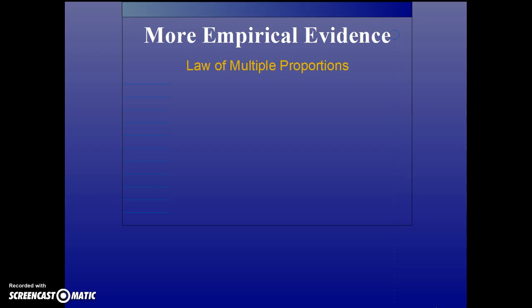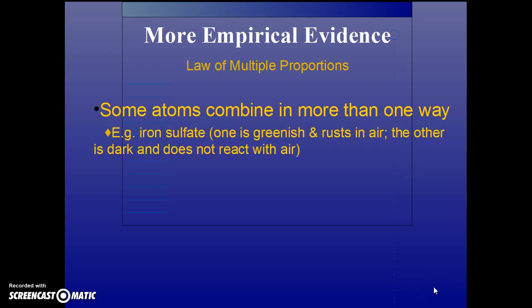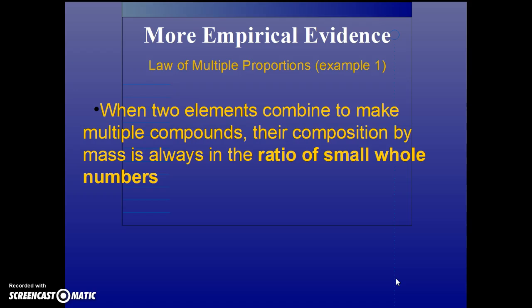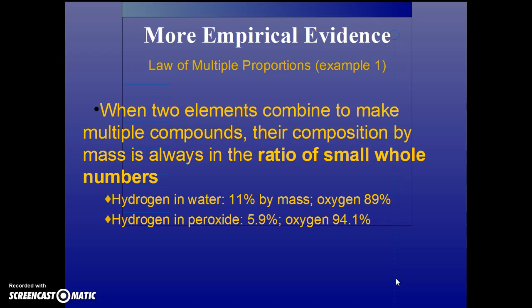There's more empirical evidence in the law of multiple proportions - some atoms combine in more than one way. For instance, there's two kinds of iron sulfate. Water and hydrogen peroxide are both elements of hydrogen and oxygen. In the law of multiple proportions, if you have two elements combining in more than one compound, that composition by mass is always in the ratio of small whole numbers. In water, it's 11% hydrogen and 89% oxygen. But in hydrogen peroxide, it's 5.9% hydrogen and 94.1% oxygen. If you divide 11 by 89 you get 0.12. If you divide 5.9 by 94 you get 0.06 - that's a small whole number ratio of 2 to 1.